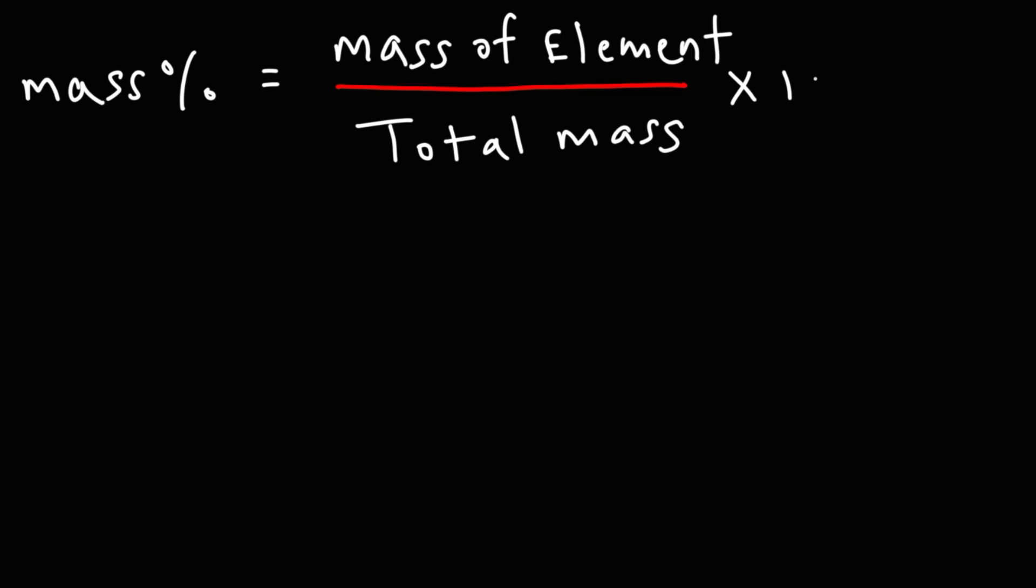Now when dealing with percent composition problems, you need to know how to calculate the mass percent of an element. The mass percent of an element is going to be the mass of that element divided by the total mass of the compound multiplied by 100%. So that's mass percent.